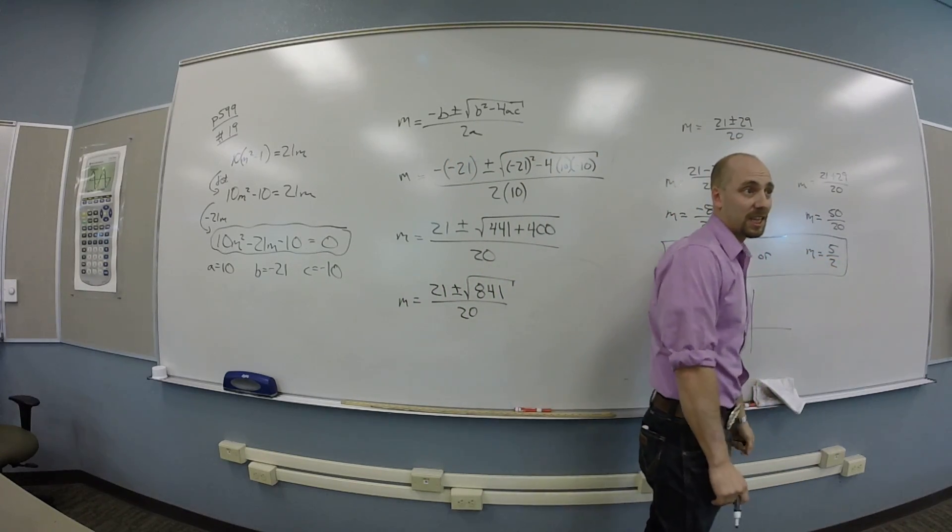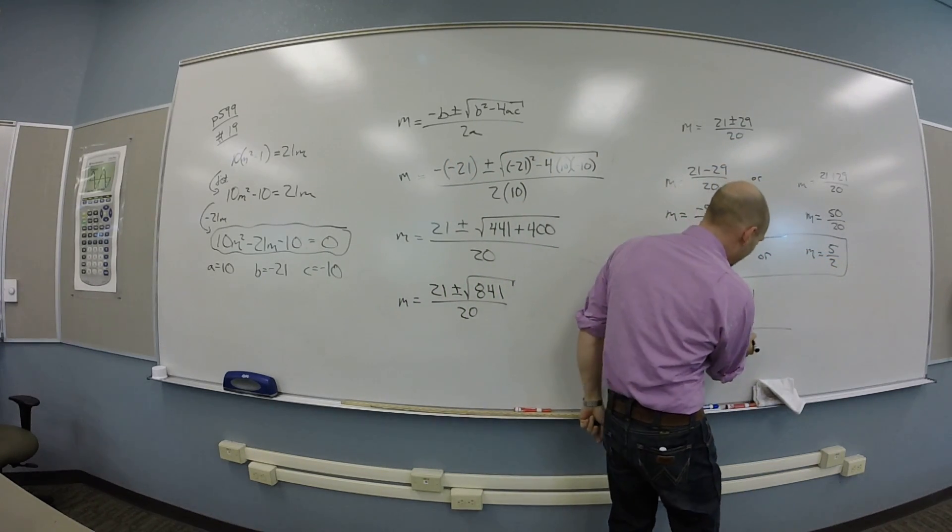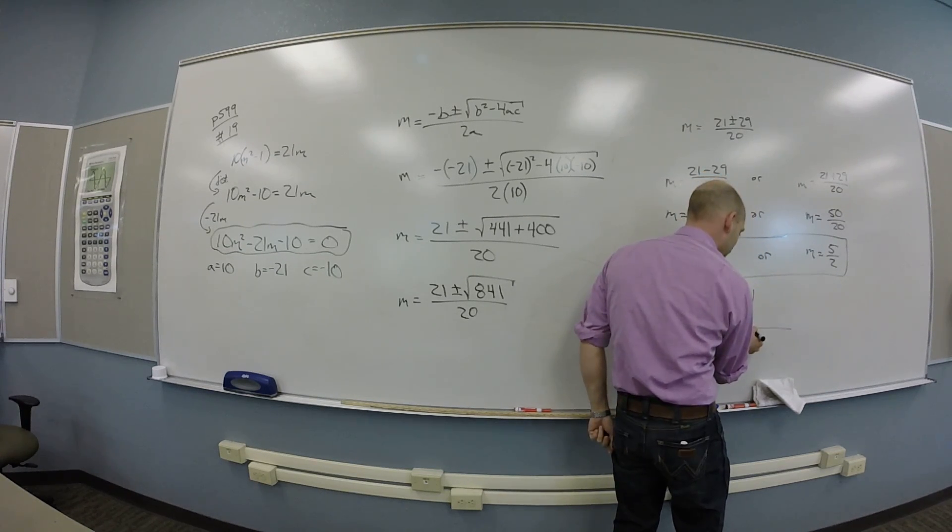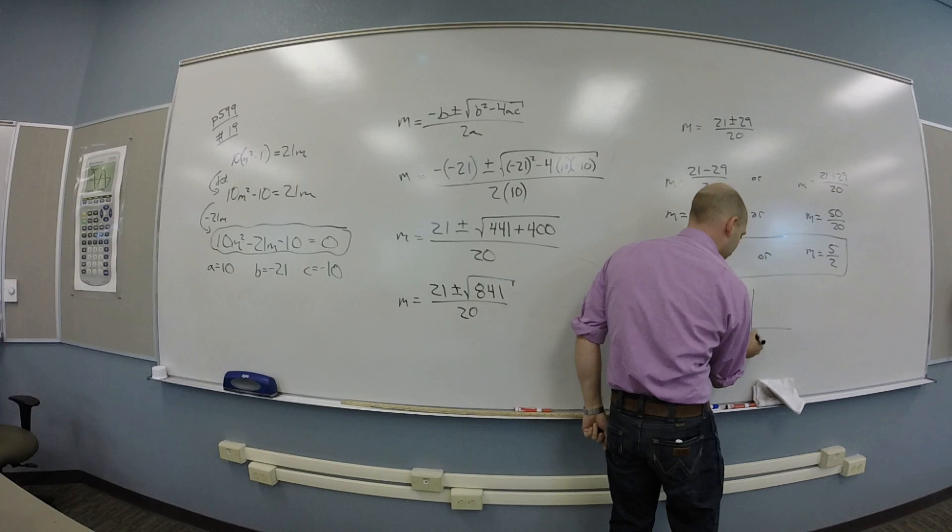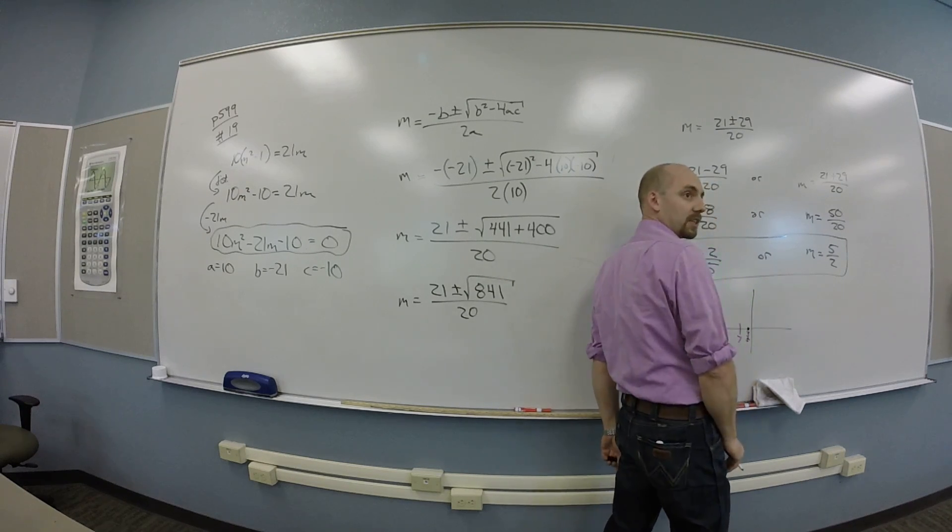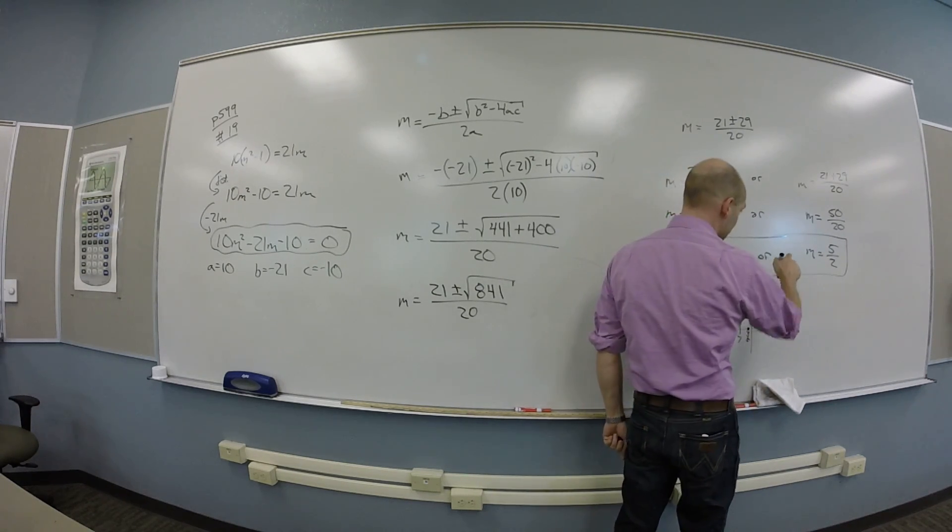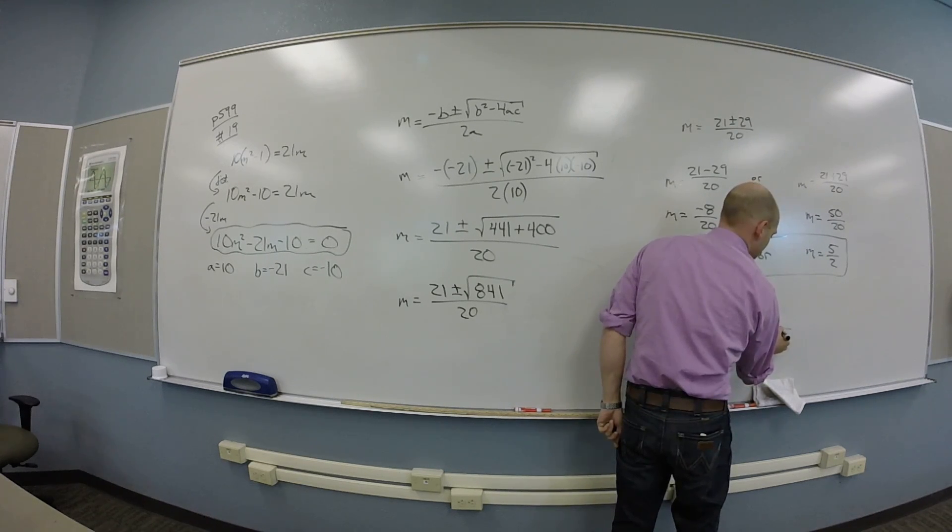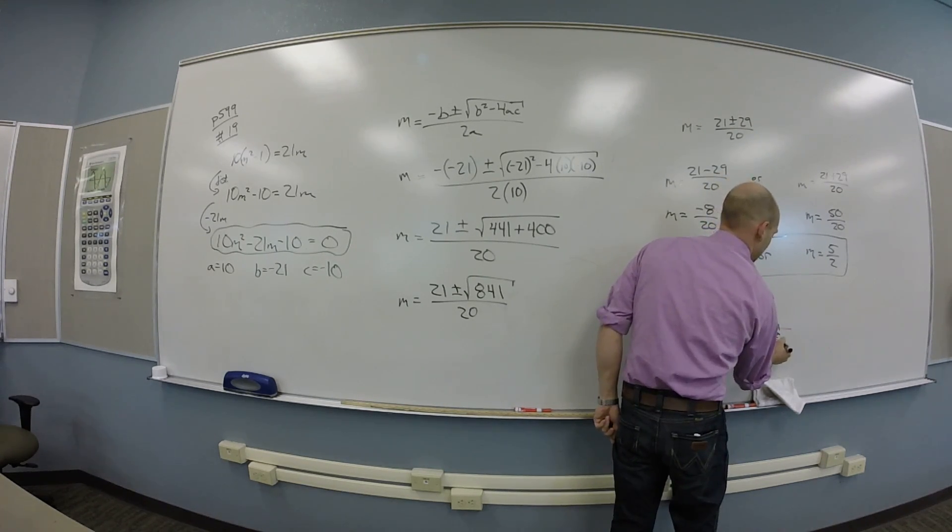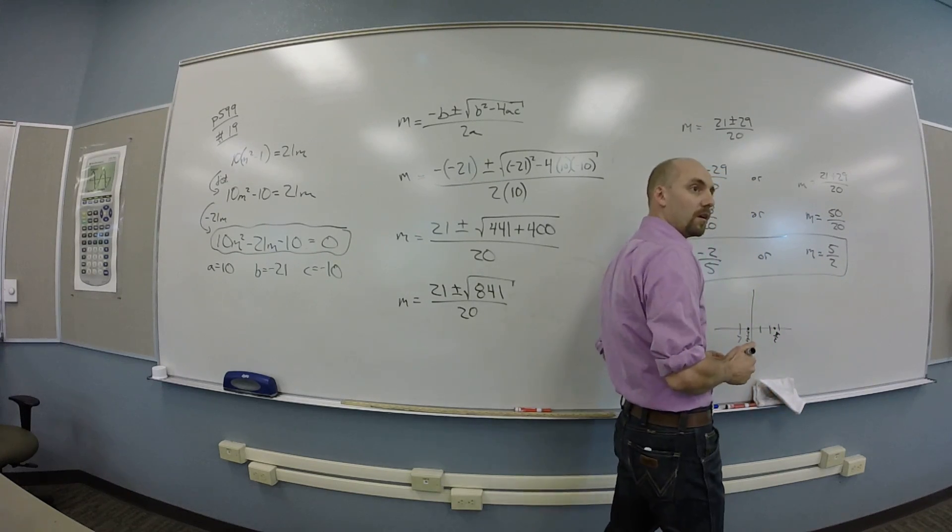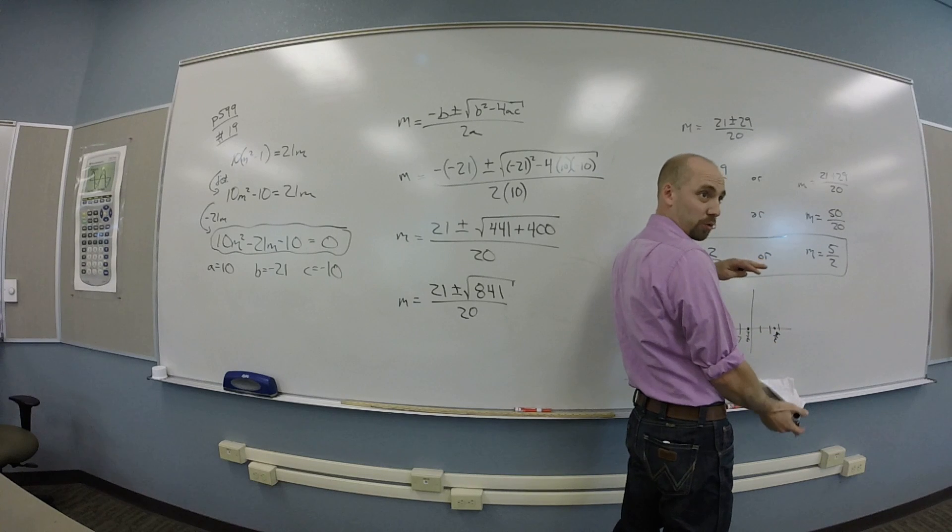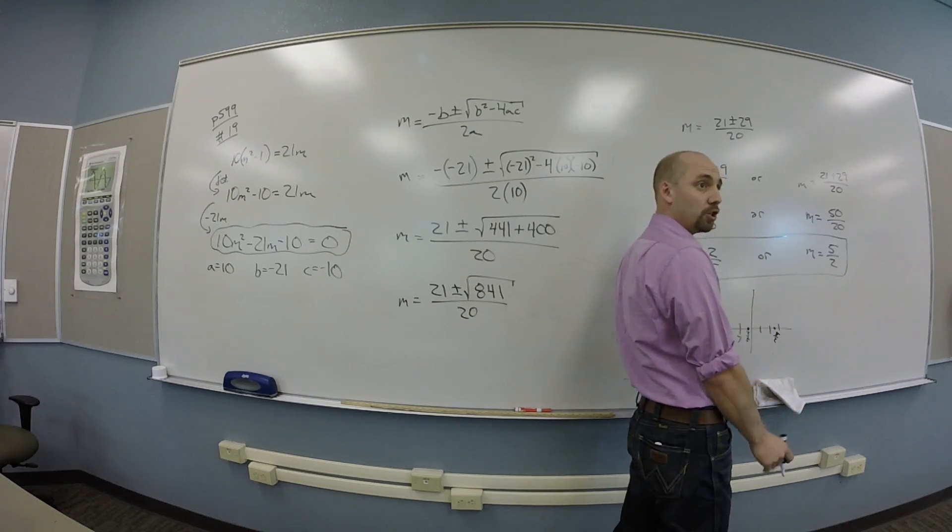That's where it hits the x-axis. So at negative two-fifths, so like here's maybe negative one. There's my negative two-fifths. You hit the x-axis there. And we hit the x-axis at five-halves, so that's like two-and-a-half. Right? So I don't know exactly kind of how squished my u-shape is, but I do know it goes through those two points.